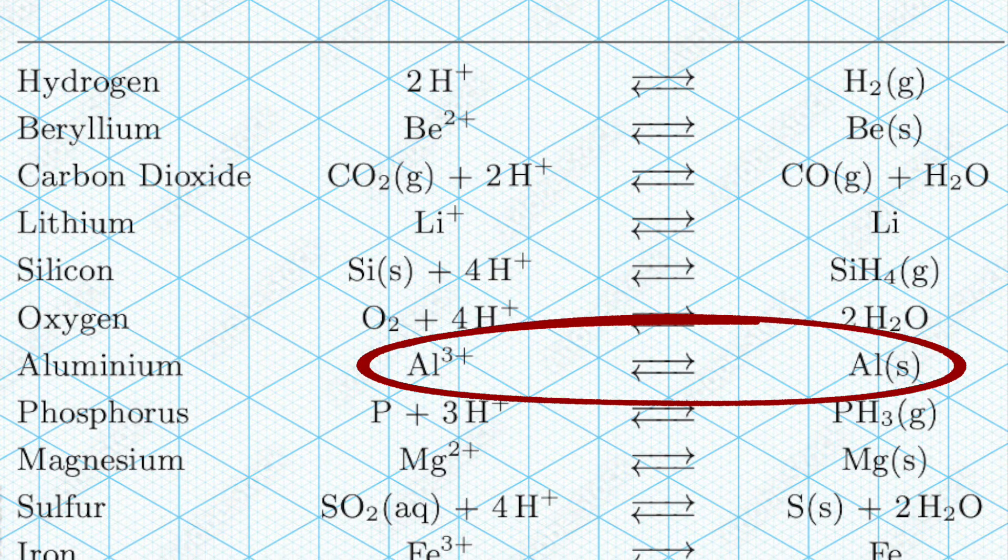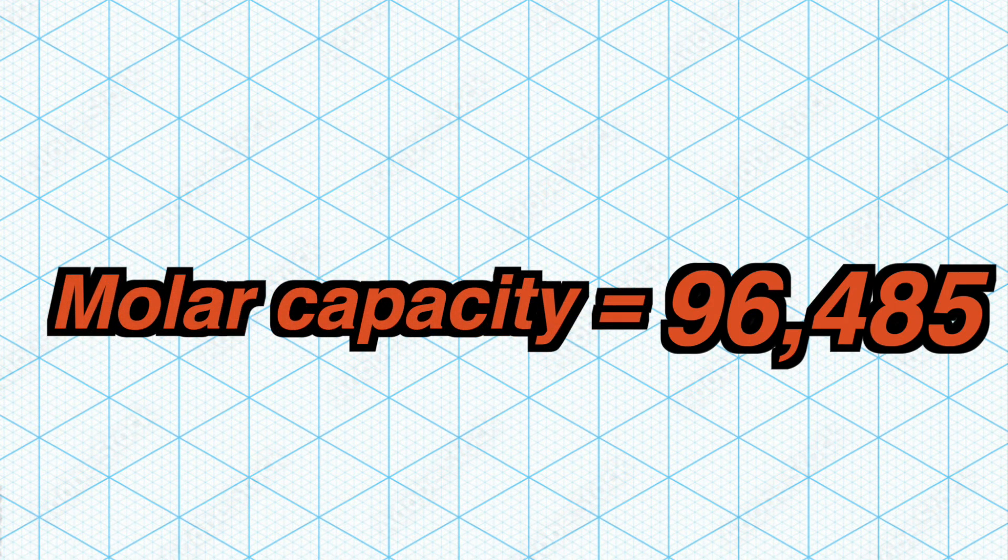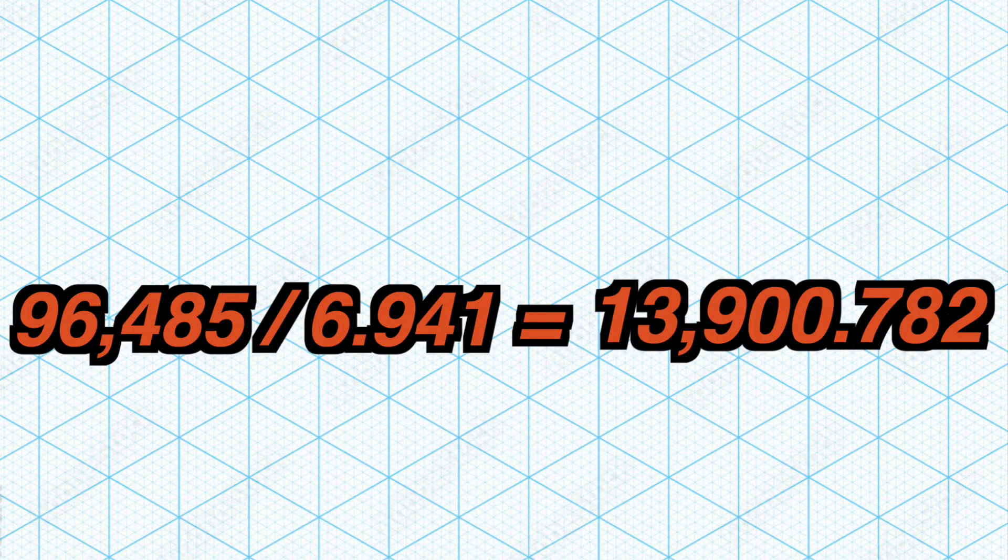Moving on, we could finally get the specific capacity when we divide the number by the molar mass of the element, which in this case lithium has a molar mass of 6.941. This gives us a specific capacity of 13,900.73 coulombs per gram.